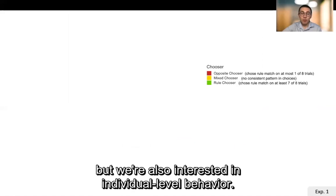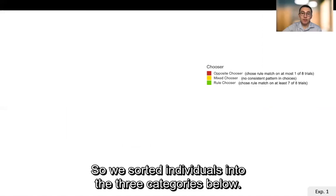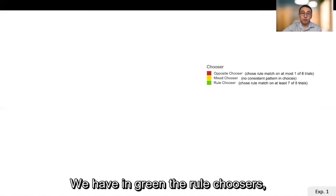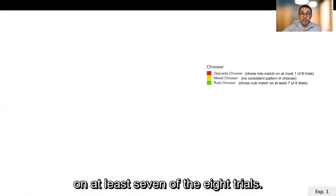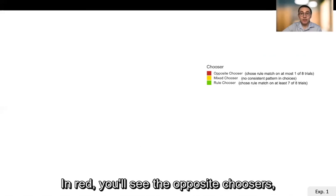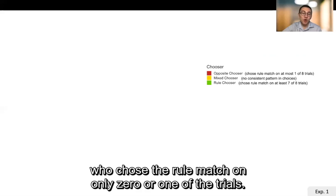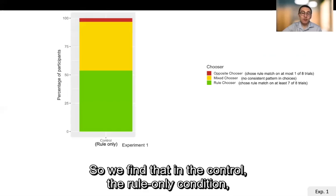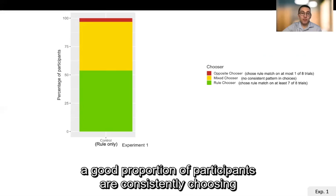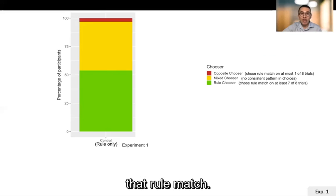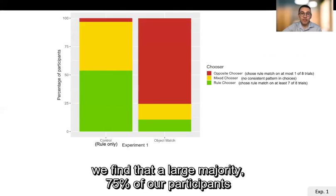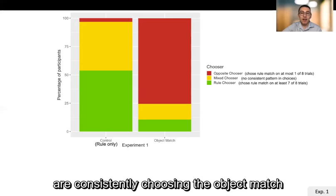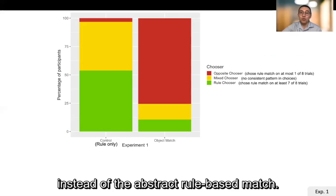So that's the group level behavior but we're also interested in individual level behavior. So we sorted individuals into the three categories below. We have in green the rule choosers who chose the rule match on at least seven of the eight trials. In red you'll see the opposite choosers who chose the rule match on only zero or one of the trials and yellow is more mixed behavior. So we find that in the control condition, the rule only condition, a good proportion of participants are consistently choosing that rule match. But in the object match condition, we find that a large majority, 75% of our participants, are consistently choosing that object match instead of the abstract rule based match.